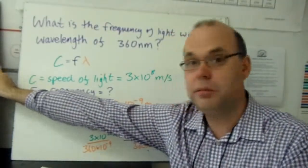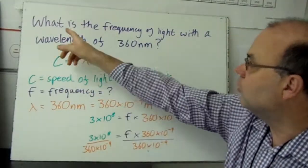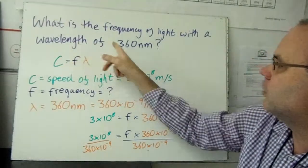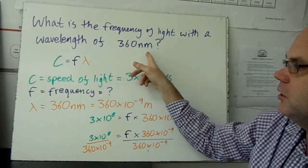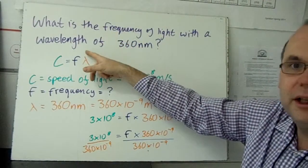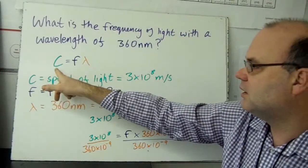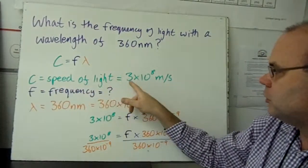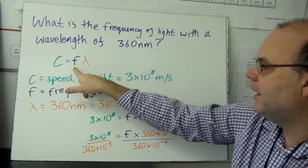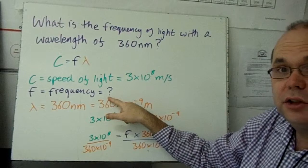Let's look at an example. What is the frequency of light which has a wavelength of 360 nanometers? First of all, we've got a frequency and a wavelength, so that means we need this equation where C equals the speed of light, which is 3 times 10 to the 8 meters per second.